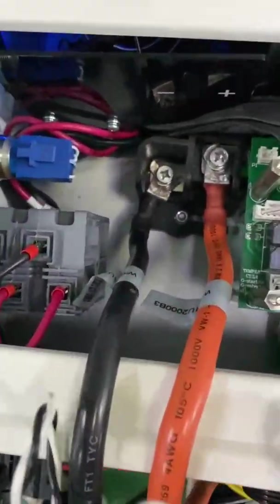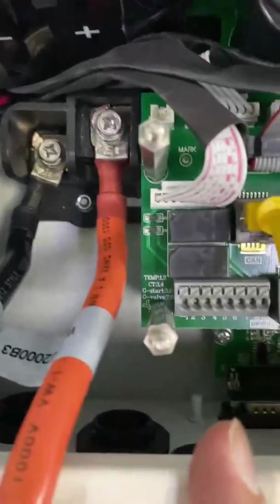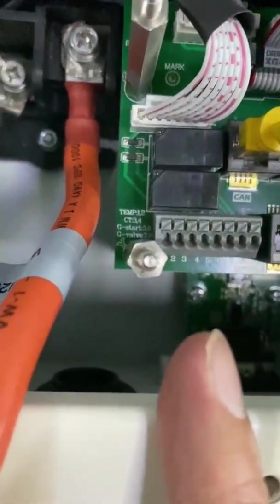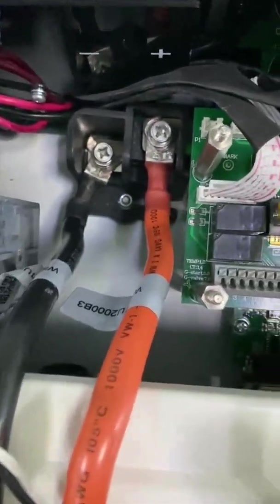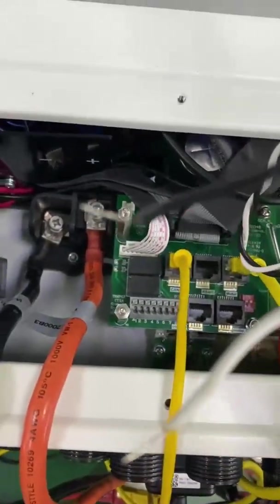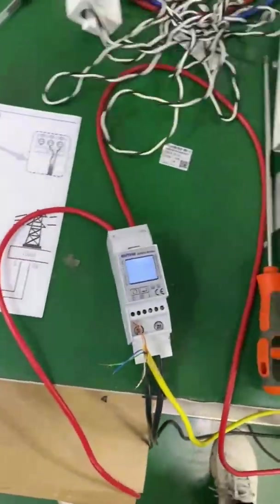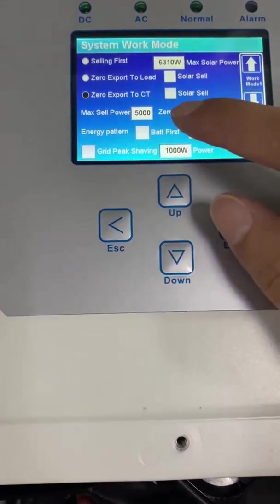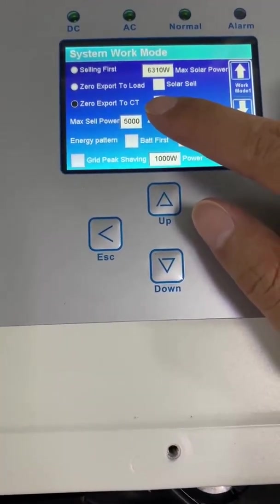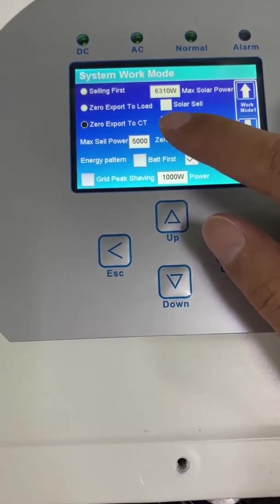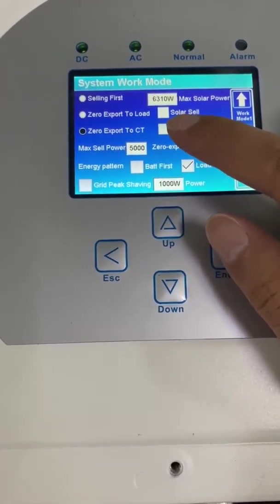When you use the CT, you need to connect at the P3 and 4. CT 3 and 4. And the white cable is pin 4. And when you use zero export to CT model, you have to install the CT or the energy meter. Otherwise, it will give you wrong readings.